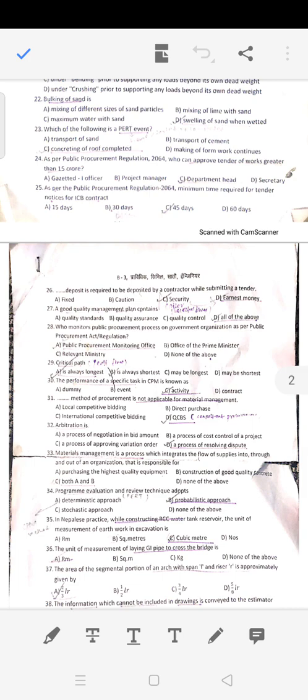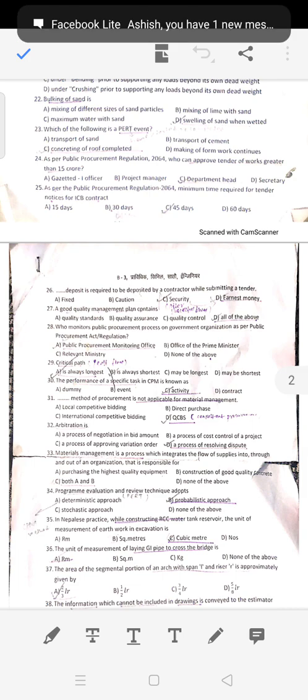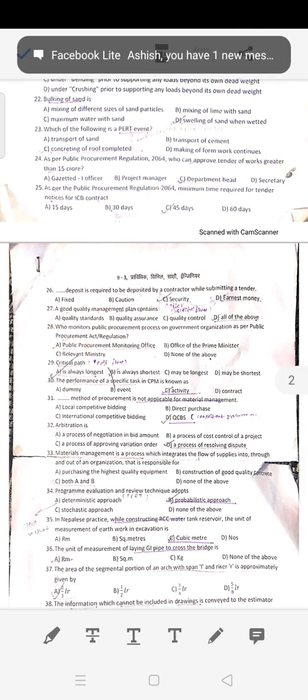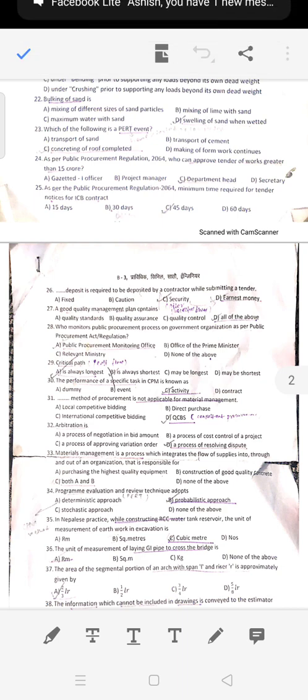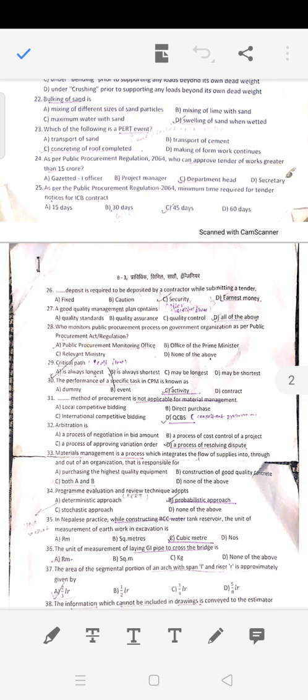Question 25: For ICB contract, the period is 45 days. For national competitive bidding, it is 30 days. Question 26: The deposit required to be deposited by contractor while submitting tender is earnest money, and security money is paid by successful bidder.